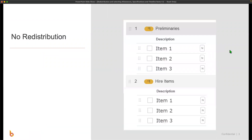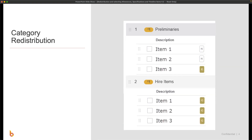To start with, we have no redistribution, which is when the N is showing — that simply means the markup is retained in that item. This is not very common for residential, but we do see it often in commercial or industrial where the markup is being handled separately in the contract. We've also talked about category redistribution, which is the default. When category redistribution is turned on, it takes the markup from item three and spreads it to other items that have a cost within the category — so item three's markup is allocated to item one and item two.